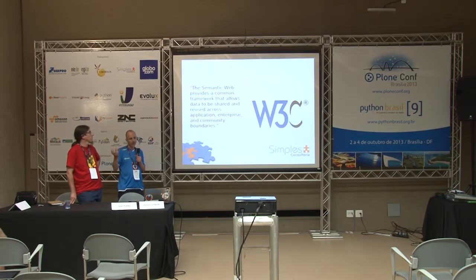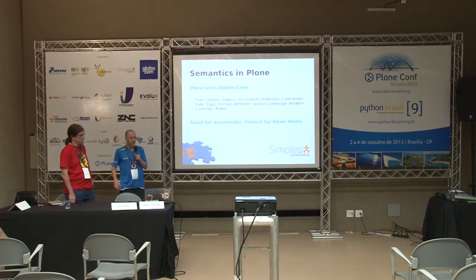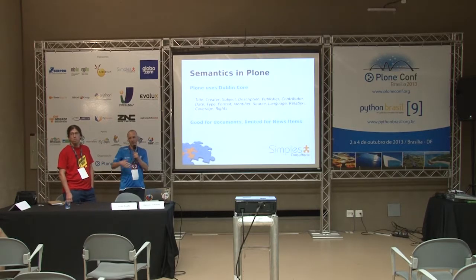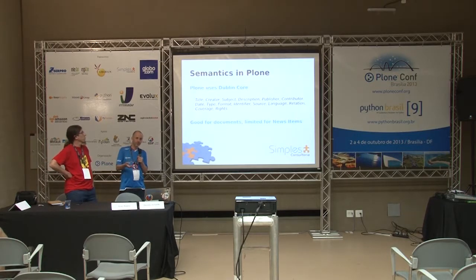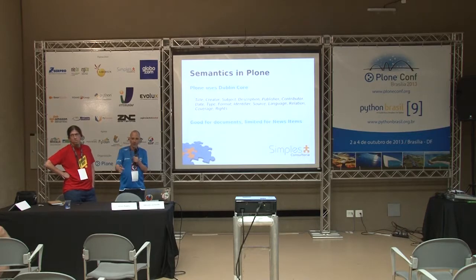We started to try to understand what the semantic web stuff that the W3C was talking about. Plone already comes with some semantic stuff — it's called Dublin Core, from the very beginning. But again, this is good for some kinds of documents, but it's not good for everything. In news articles, we have a lot of stuff not covered by Dublin Core. You can also find information about authors, events, or other kinds of information that is not covered. This is not enough.